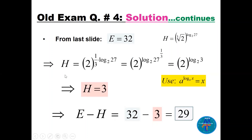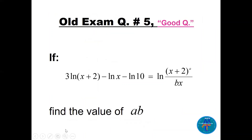For h: we have 2^(1/3) times log base 2 of 27. Going backward using the power rule, 1/3 moves to the power of 27, giving log base 2 of 27^(1/3) = log base 2 of 3. Using the property a^(log base a of x) = x, we get h = 3. Therefore e − h = 32 − 3 = 29.